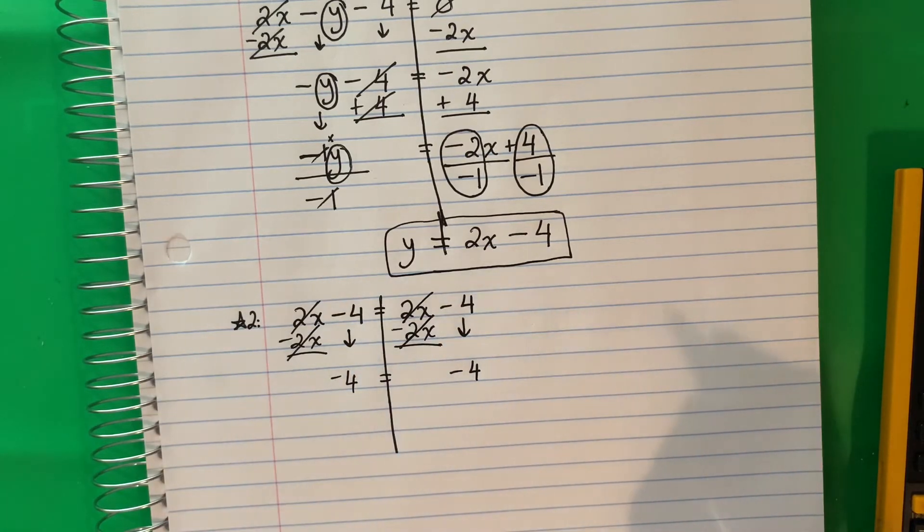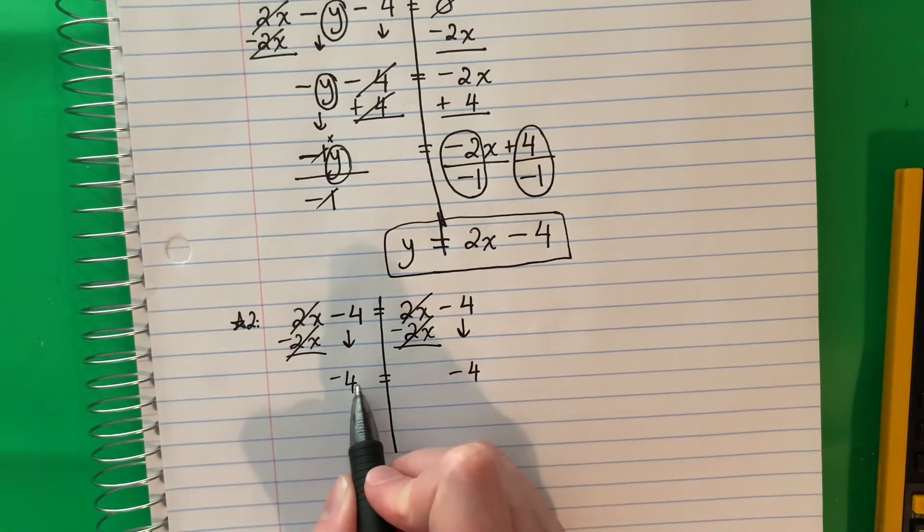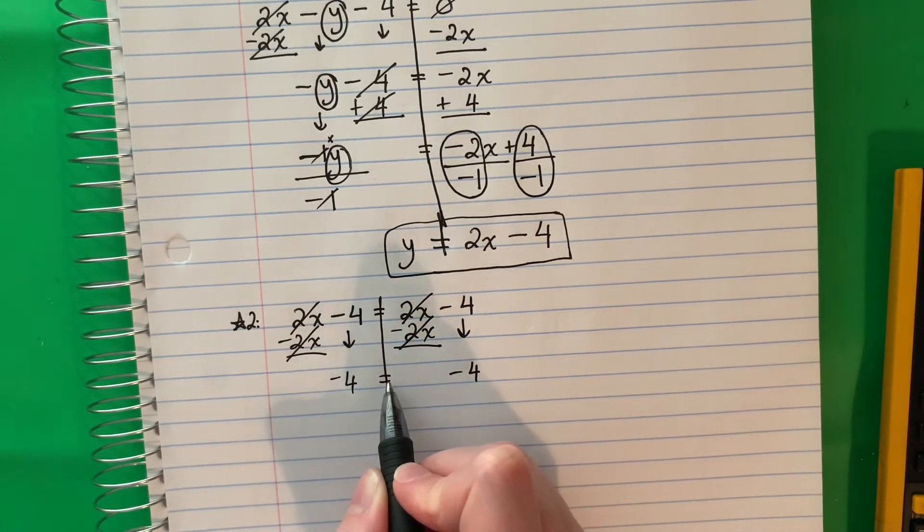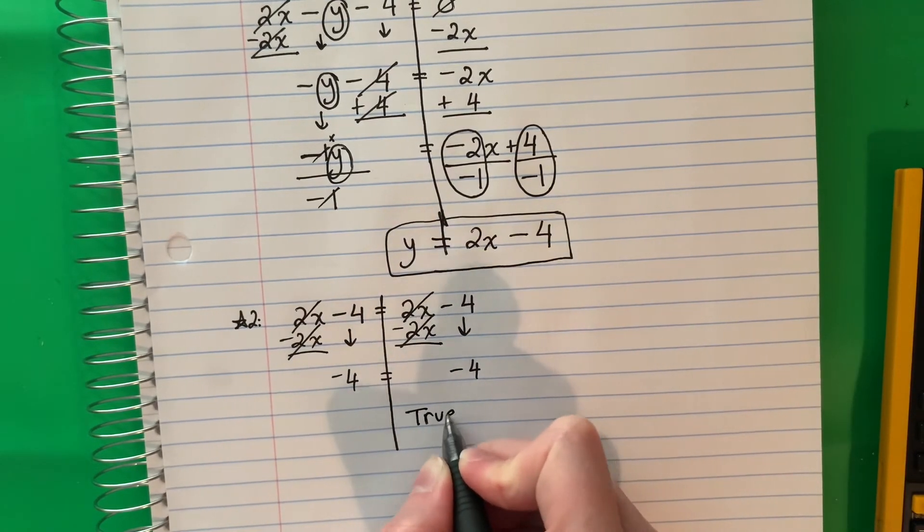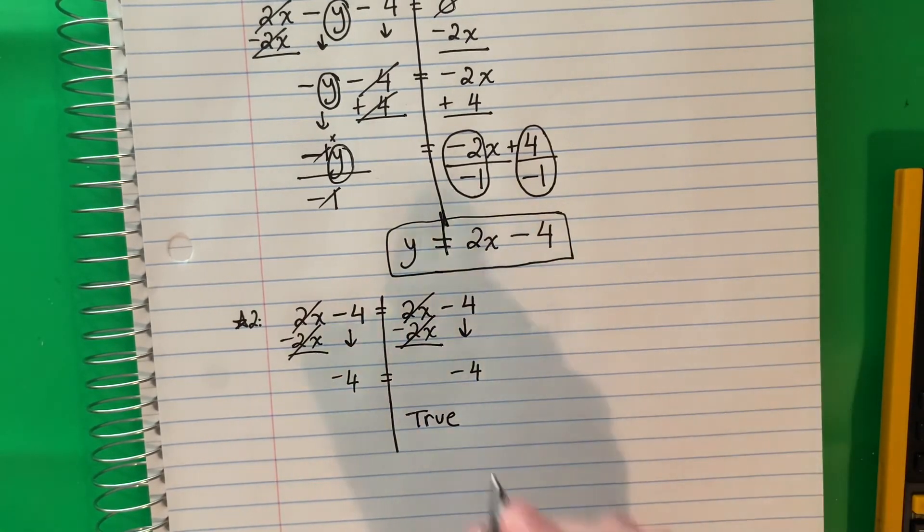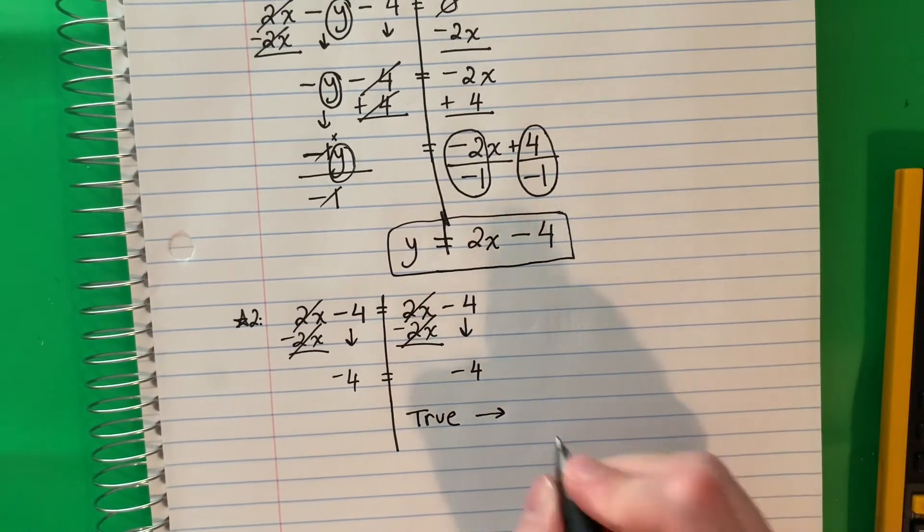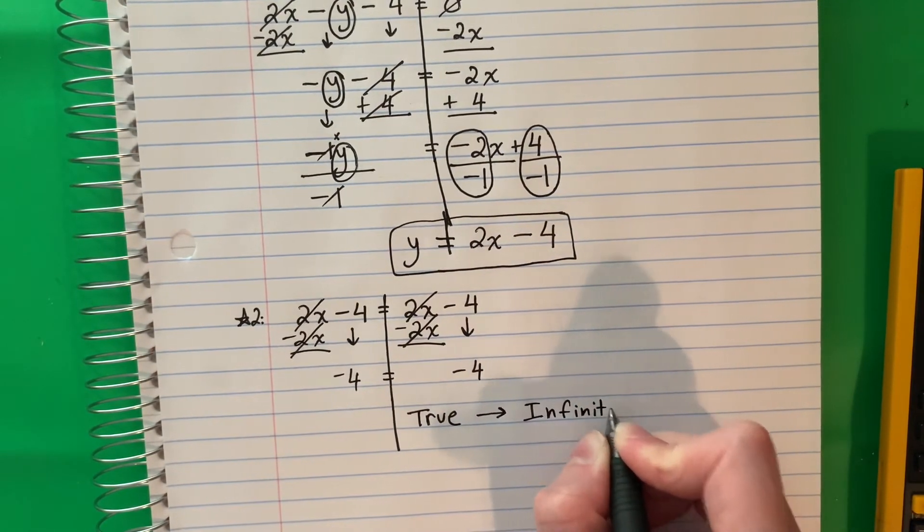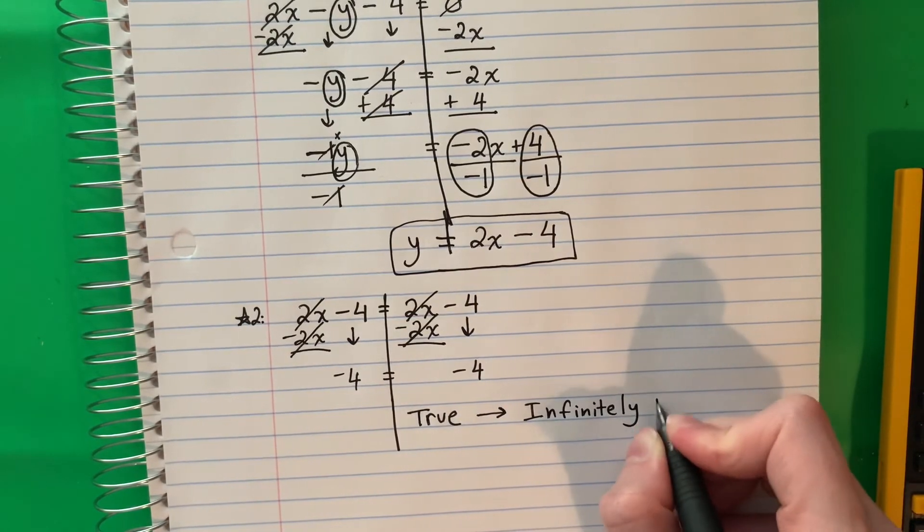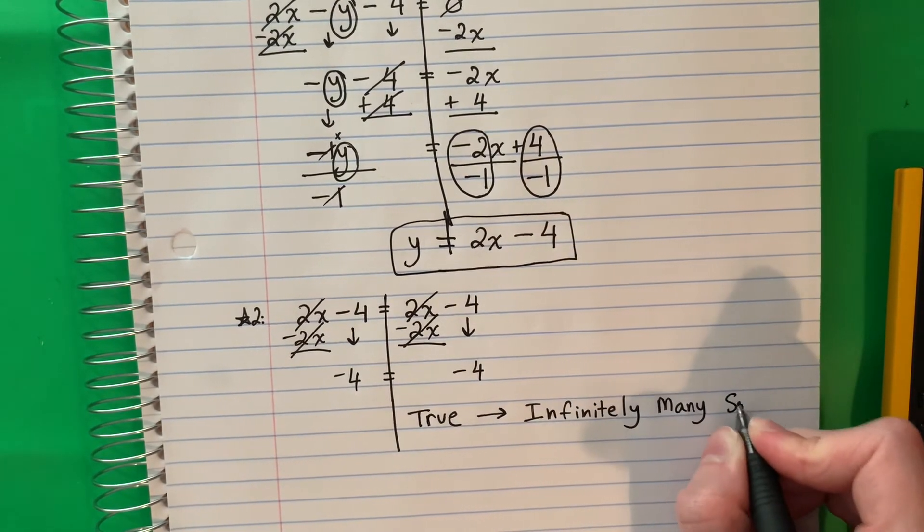So we will just see true or false. Negative 4 is equal to negative 4. Is that true or false? That is true. They are the same. So if it's true, your answer is infinitely many solutions.